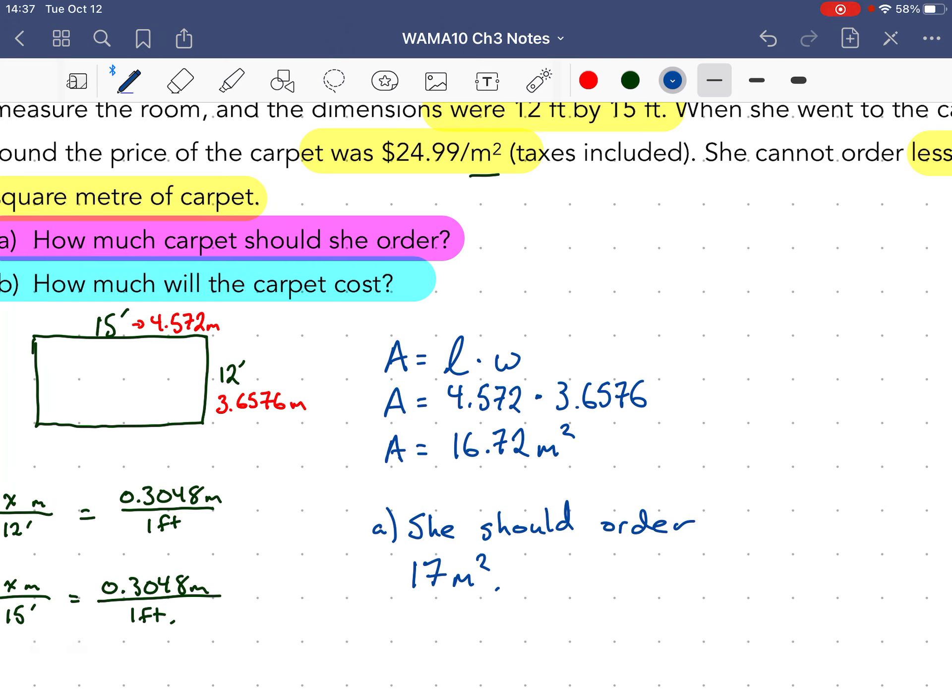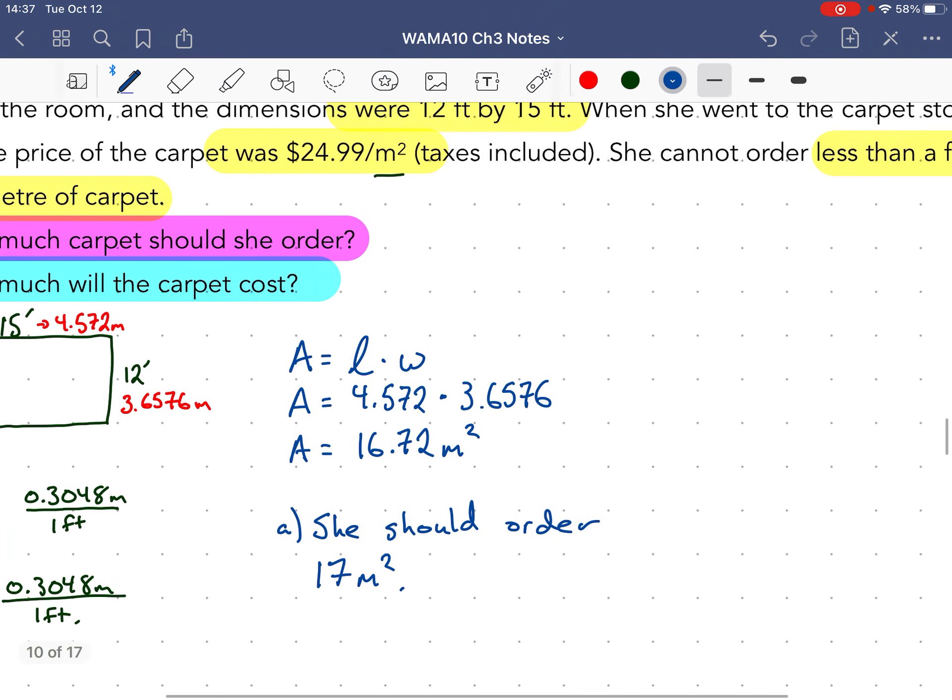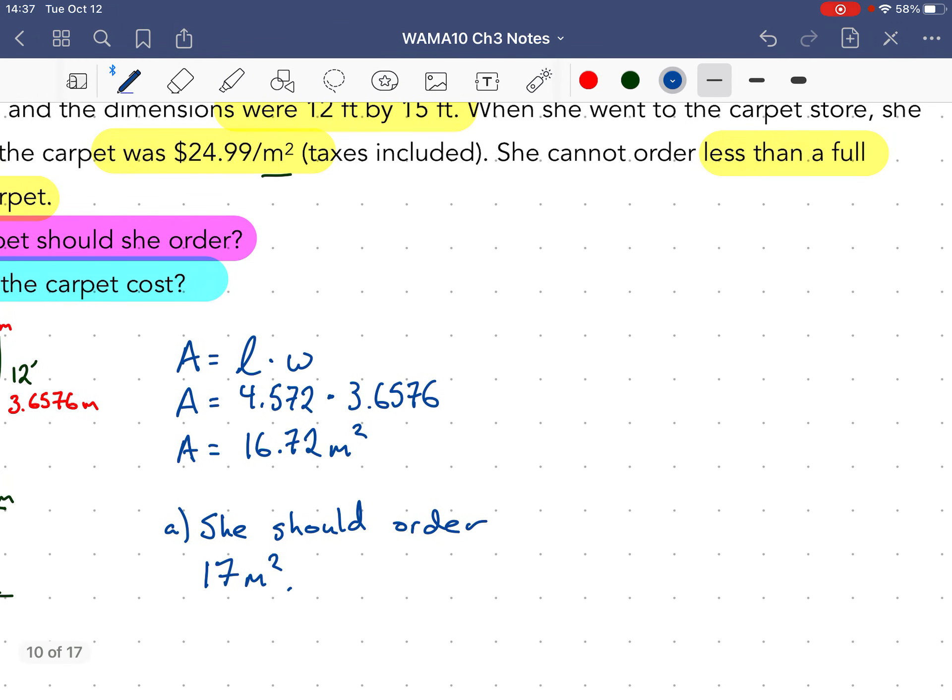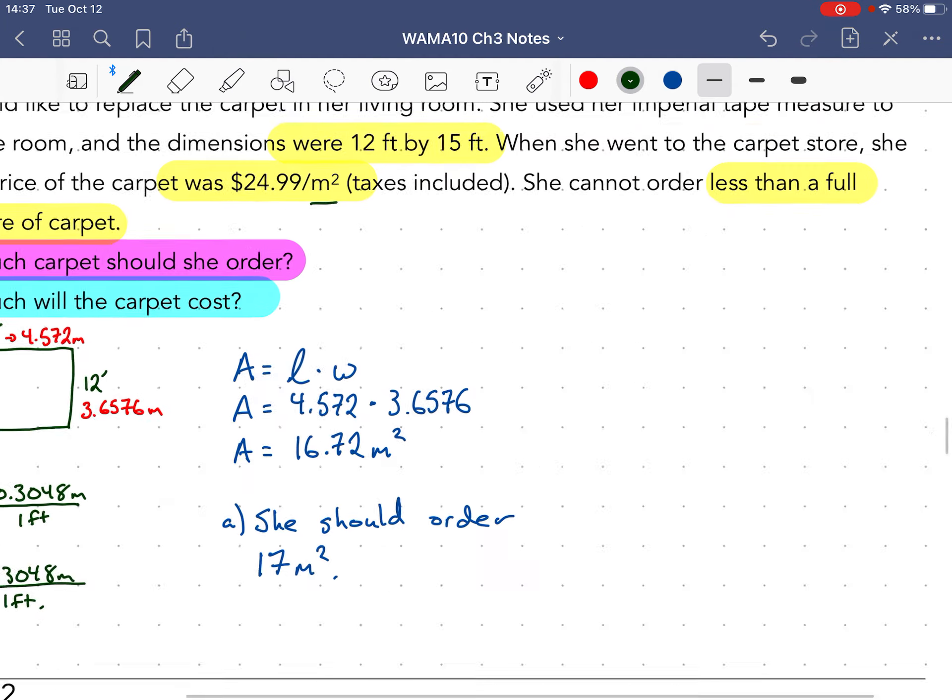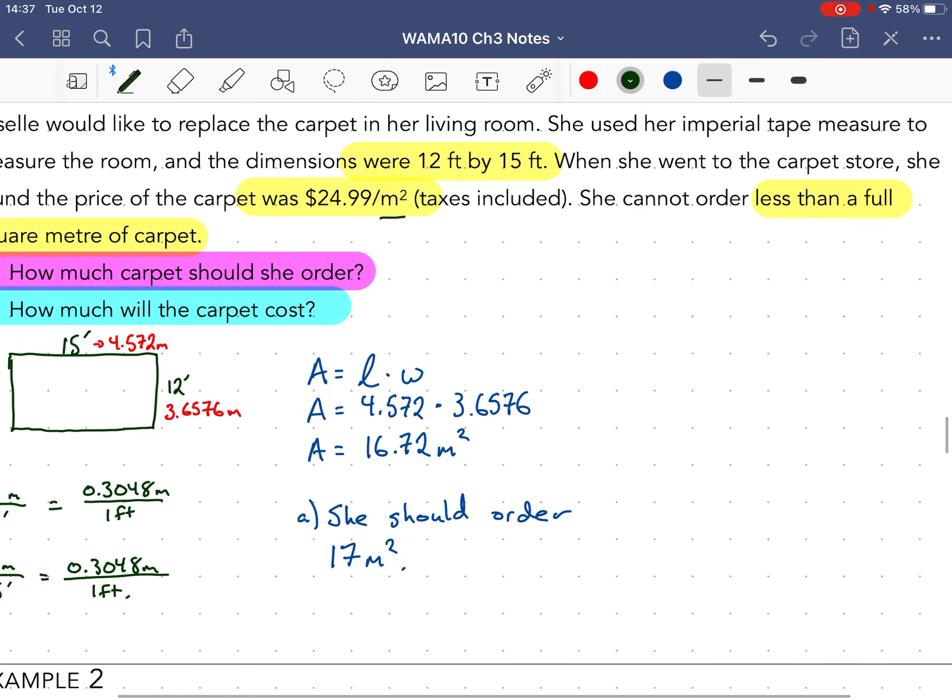All right, now again, if you're actually doing this for a house, you might want to have a little bit higher error budget. So you might order 20 square meters just to make sure that you have enough. If you have a lot of experience with carpeting, you'll know how much extras you should buy.